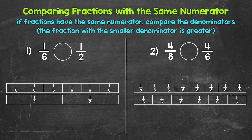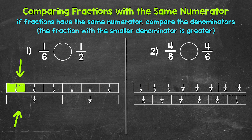Now here, we're going to use fraction strips to help us visualize this. So we have two fraction strips below — one showing sixths and one showing halves. One of the strips is divided into six equal parts, and the other is divided into two equal parts. Let's shade one-sixth right here, and then we can shade one-half right here.